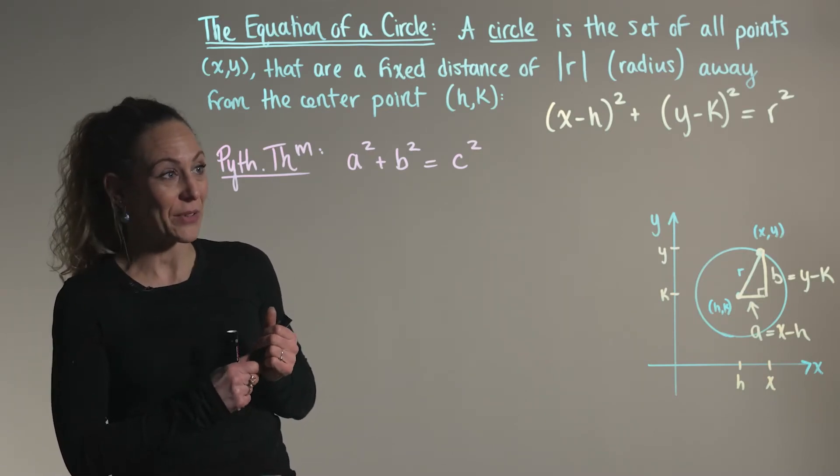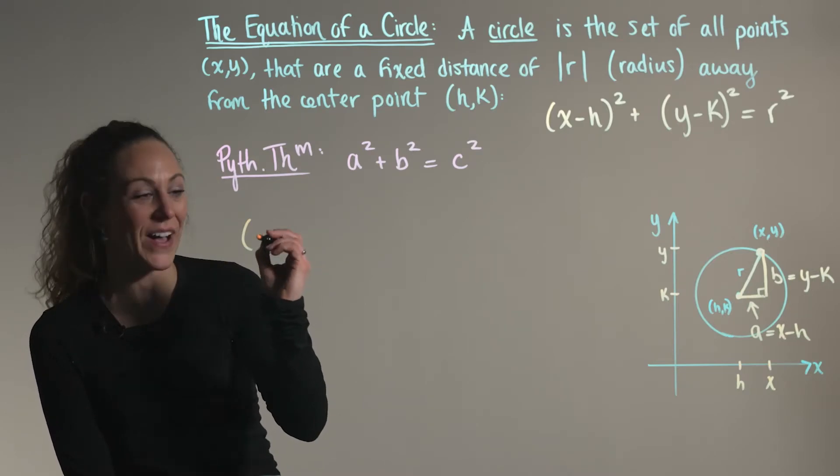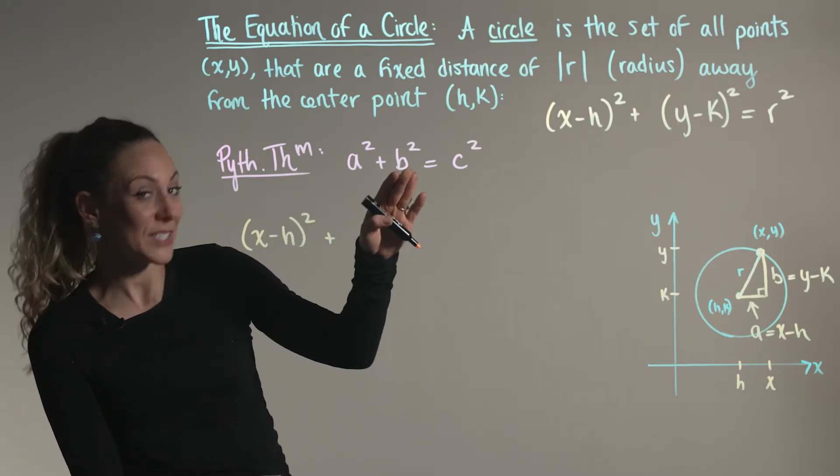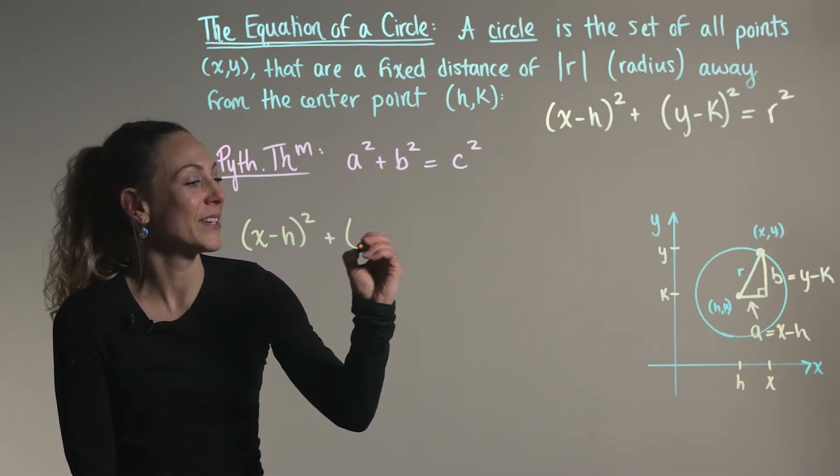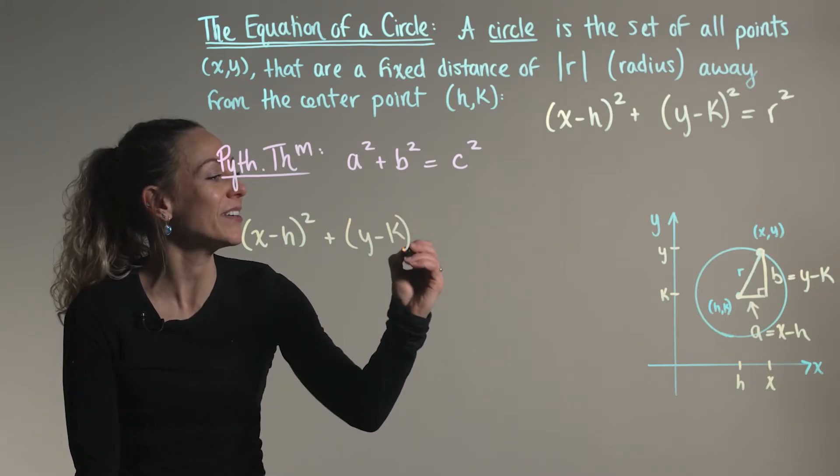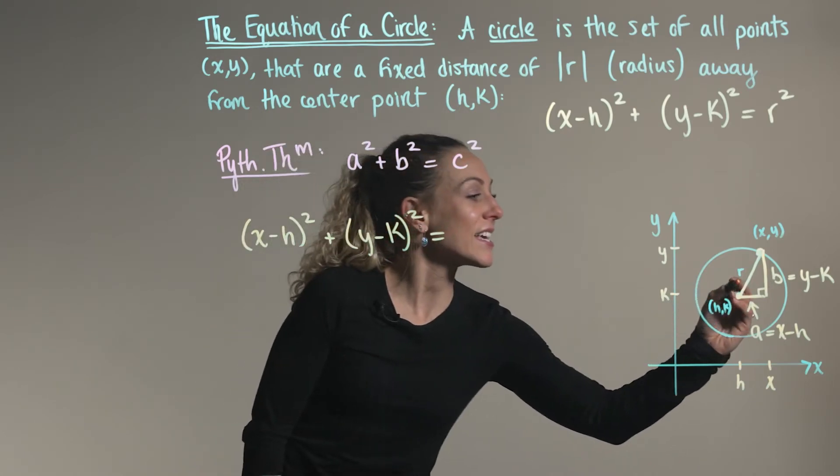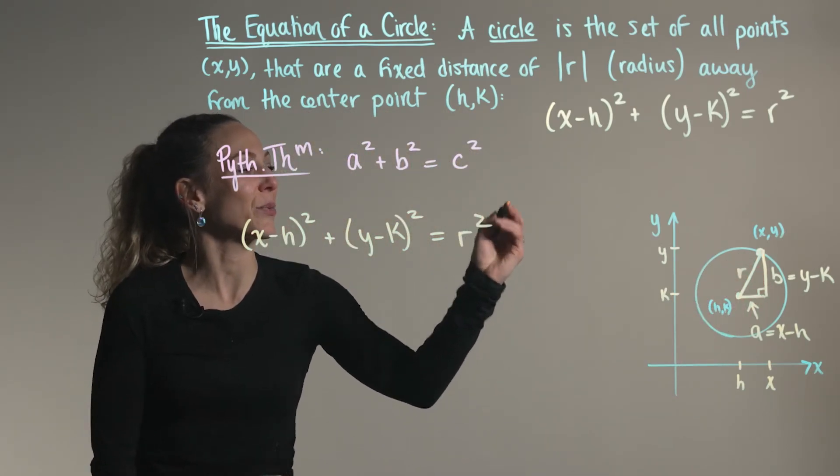So plugging our given values in, we have the following: a is the change in our x values, (x - h)², plus b, which is the change of the height, the change in our y values, (y - k)², and c, the hypotenuse of our right triangle, in this case is represented by the radial length, r².